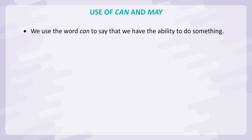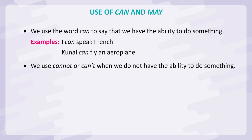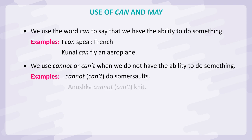We use the word can to say that we have the ability to do something. Examples: I can speak French. Kunal can fly an aeroplane. We use cannot or can't when we do not have the ability to do something. Examples: I cannot / can't do somersaults. Anushka cannot / can't knit.